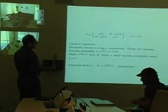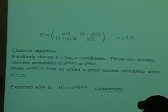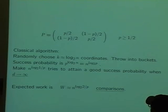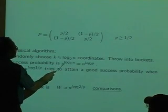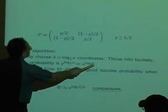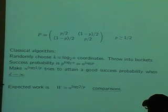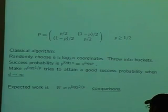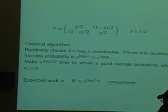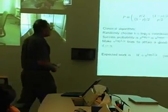We are choosing random k coordinates. What are the chances that the two members of the pair will fall into the same basket? It's p to the k, because the chance that they agree on a single coordinate is p, which is about n to the log base two of p. This is the probability — it could be quite small. This is the chance that in one try, where we chose those coordinates and threw into baskets, we found something.